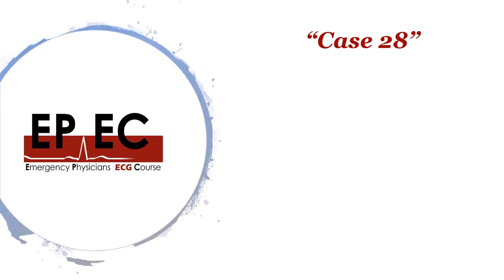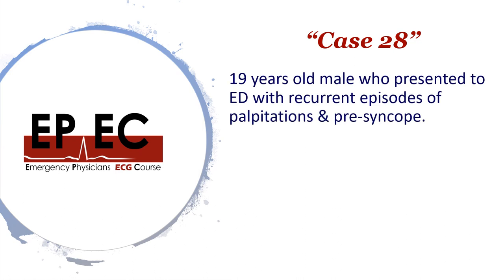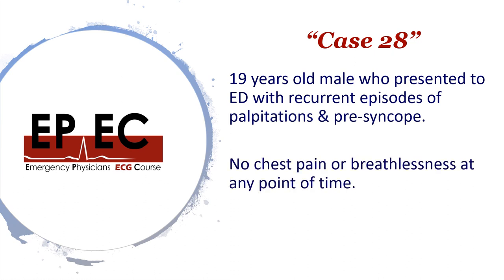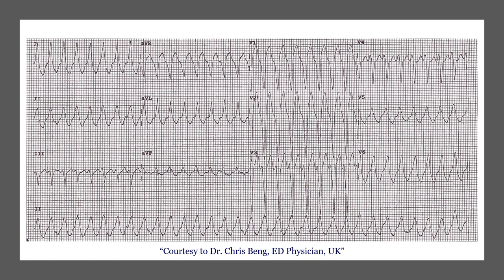Let's start with case number 28, because it has the more interesting and more educational ECG findings. This was a 19-year-old male patient who presented to the ED with recurrent episodes of palpitations and presyncopal events. There was no chest pain or breathlessness at any point. He had a 12-lead ECG on arrival and it showed a broad complex regular tachycardia — the patient was in VT.